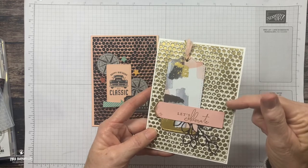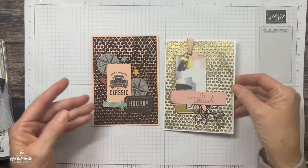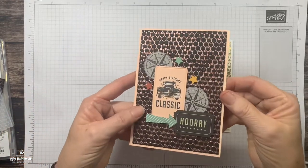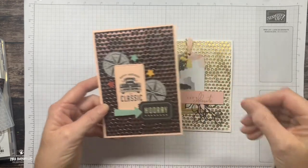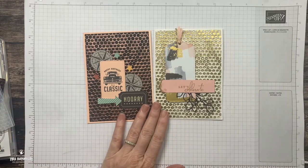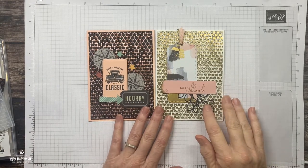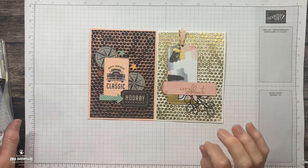This is gold embossing powder on white cardstock and this one is copper on black cardstock. I've used metallic embossing powders. You could possibly use just your black or your white depending on the look you're after.